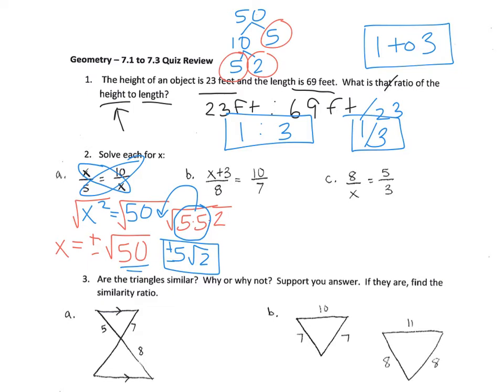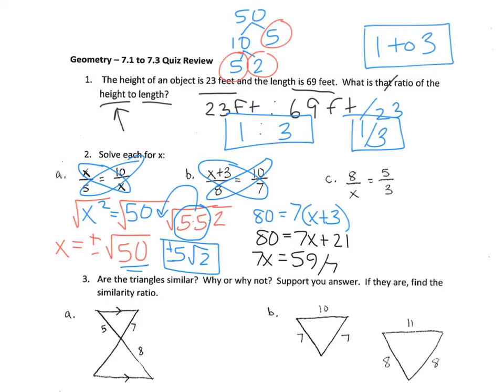Letter B, you're going to use the cross product property again. So I'm going to circle the diagonals and write 80, because 8 times 10 is 80, equals 7 times the quantity x plus 3. So when there are two terms like this, you need to be careful and write this in parentheses. So it's 80 equals 7x plus 21. 7x equals 59, because 80 minus 21 is 59. And then divide both sides by 7. So x equals 59 divided by 7, and that does not reduce at all.